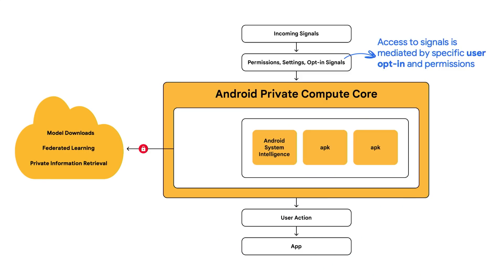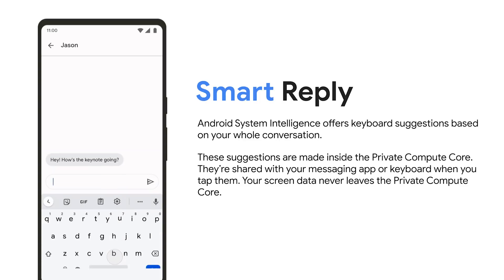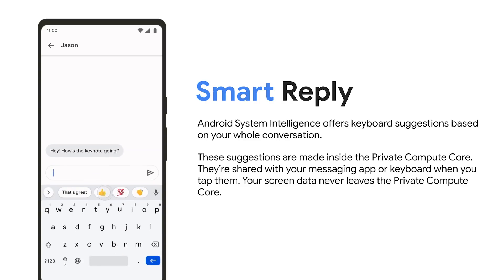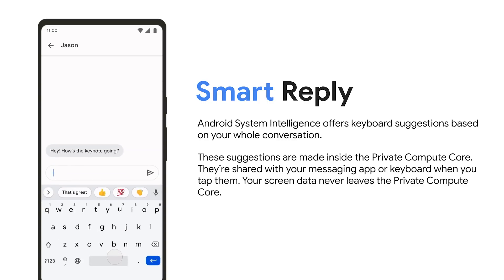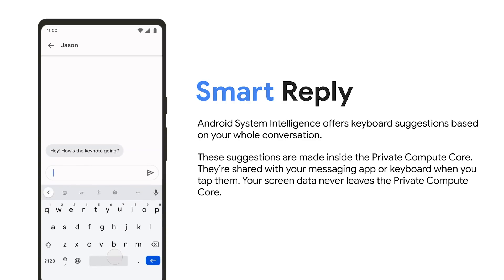In Android 12, we're improving the protections around these features by creating a new concept of a private compute core. Many features need to process sensitive data to work. For instance, Now Playing can only recognize music nearby by listening, but audio around you is really sensitive. So Android 12 adds an OS private computing layer — a place which is isolated technically from the rest of the operating system, from other apps, and from the network. It's where data processing happens in a secure and confidential way. For example, Smart Reply lives inside Private Compute Core. When you're typing in an app, Gboard asks Smart Reply to make suggestions based on the conversation on screen. Thanks to Private Compute Core, this data processing happens in a secure and confidential way. The sensitive data is never shared with the app, the keyboard, or Google.